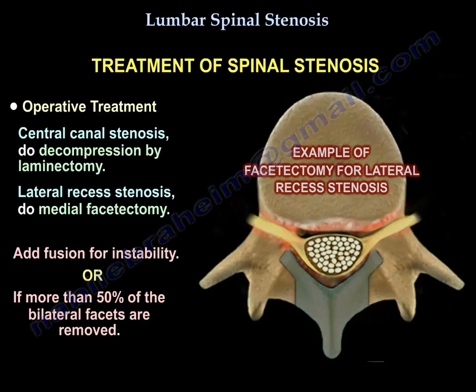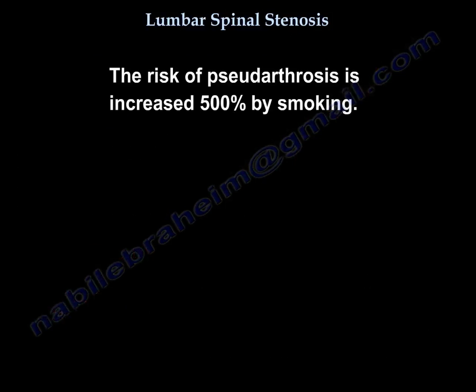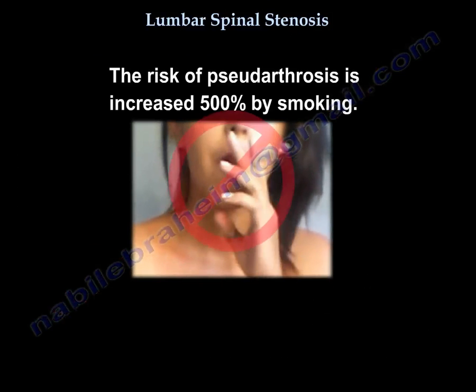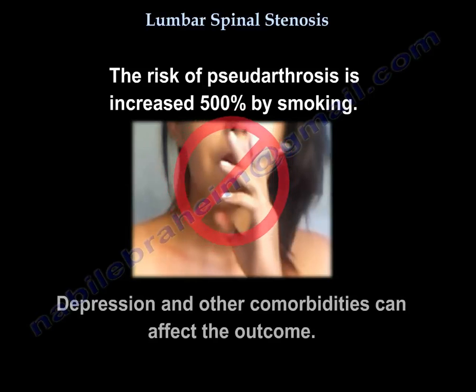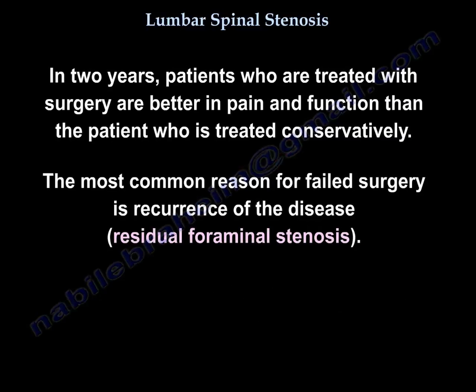Look at the X-rays or the MRI. If there is a slip of the vertebra, then you will do fusion in addition to the laminectomy. The rate of pseudoarthrosis is 500% higher with smoking. Depression and other comorbidities can affect the outcome. In two years, patients treated with surgery are better in pain and function than patients treated conservatively. The most common reason for failed surgery is recurrence of the disease.